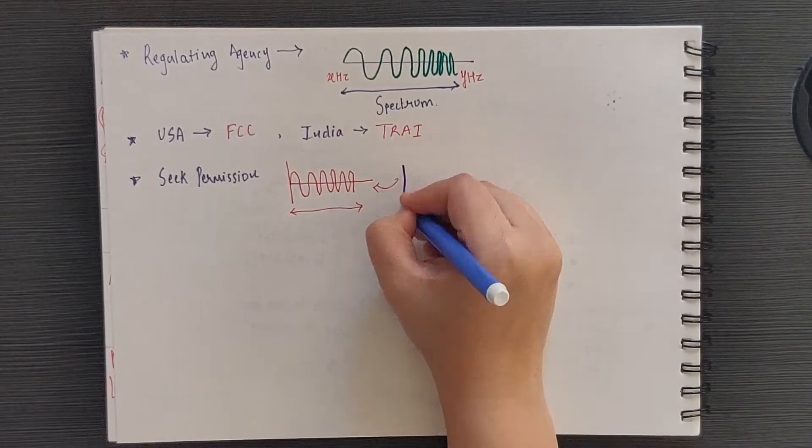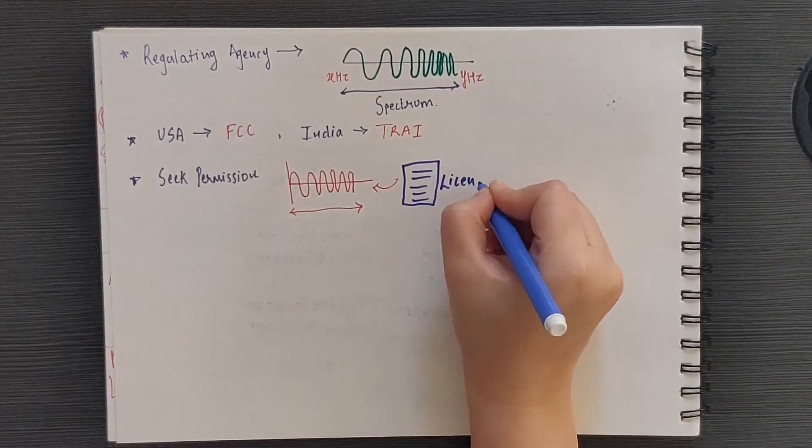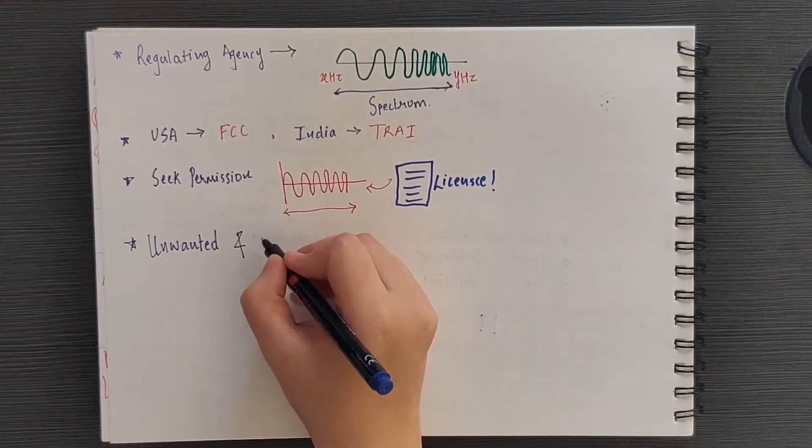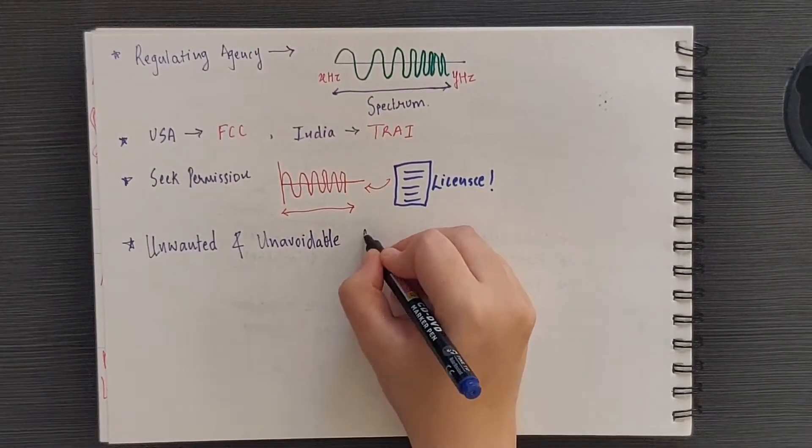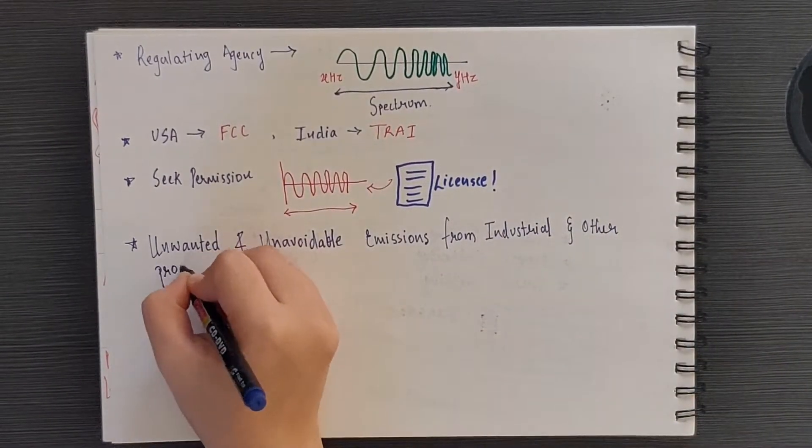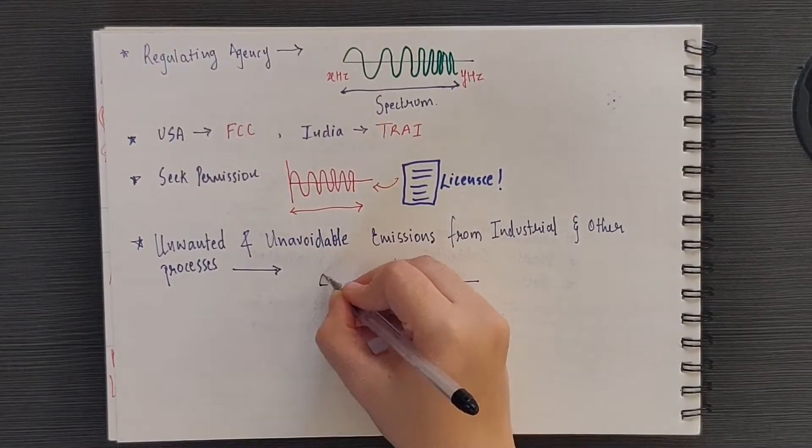These agencies are responsible for managing and licensing the electromagnetic spectrum for users. Thus, all these unwanted and unavoidable emissions from industrial and other processes that we just discussed were provided a few megahertz of space in both the directions by the FCC.